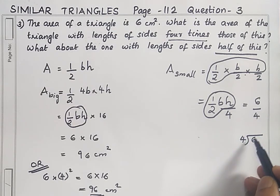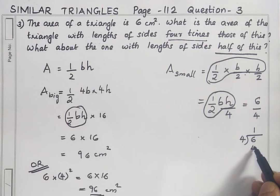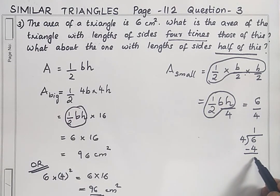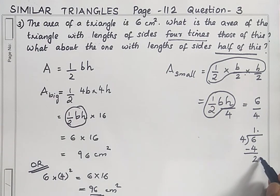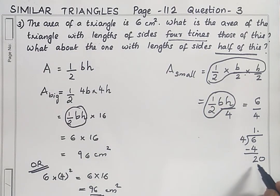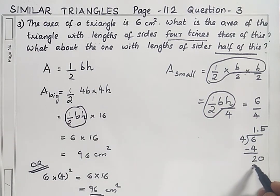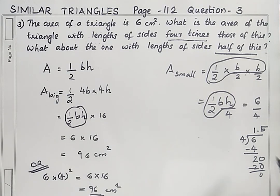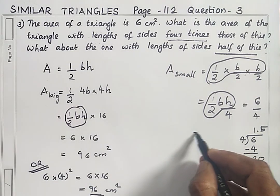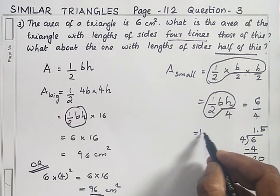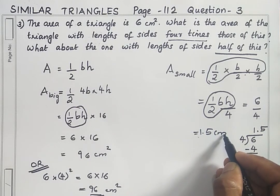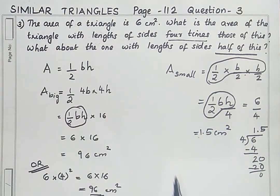For the second part, how many times does 4 go into 6? 1 time — 4 is 4, remainder 2. Decimal point: how many times does 4 go into 20? 5 times — 4 is 20, remainder 0. So 1.5 cm² is the area of the triangle.